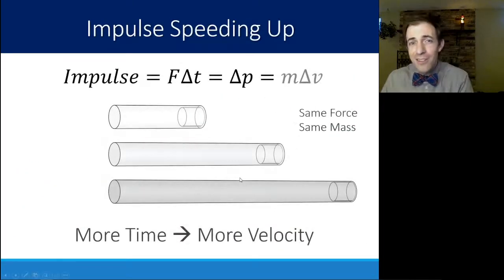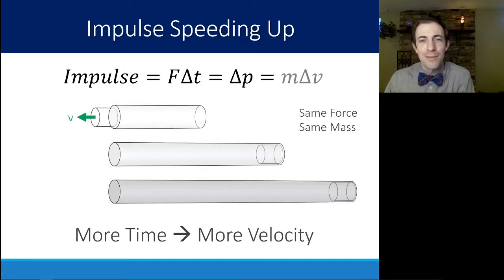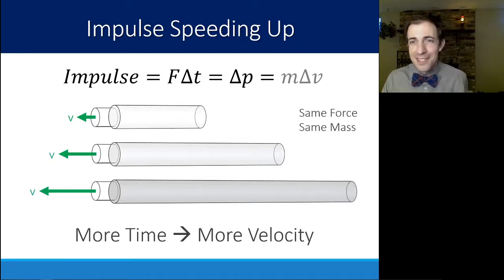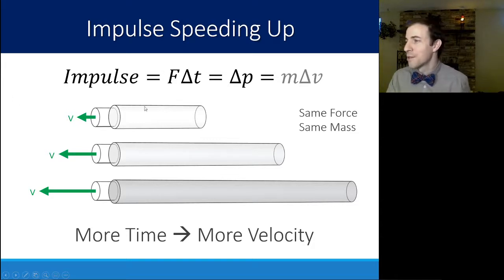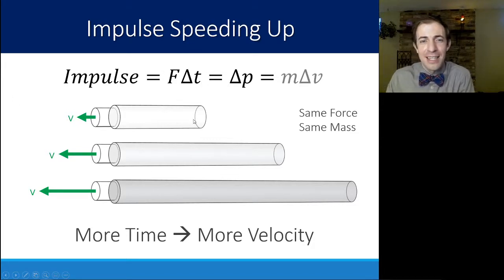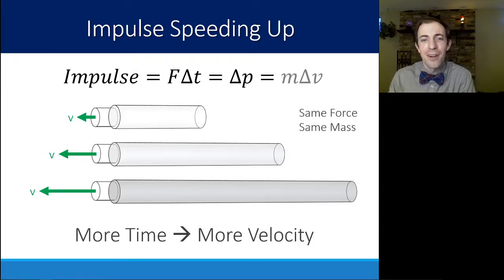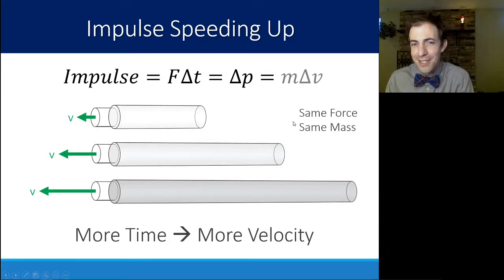We can also look at this for an object speeding up, using a marshmallow shooter. The force and mass were the same, so by changing the time — specifically the length of the barrel — we were changing its velocity. The longer the barrel, the more time the force was imparting, and the larger the change in velocity on the other side.